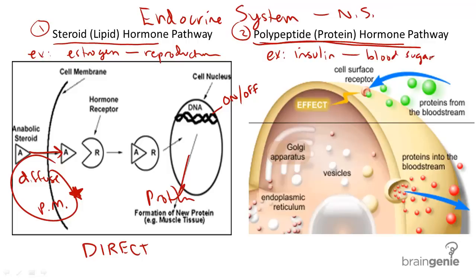The way that protein hormones work is that these long polypeptides cannot enter directly through plasma membranes. Therefore, they must bind to receptors on the cell surface to activate enzymes, because they are too large to enter the cell. These hormones trigger a secondary messenger called cAMP, or cyclic AMP.